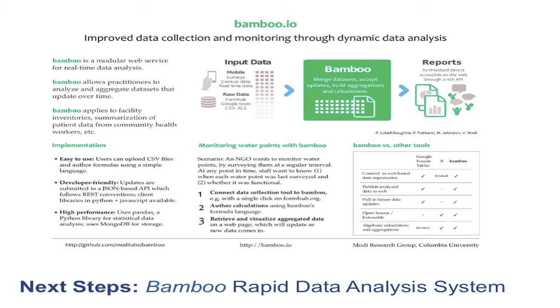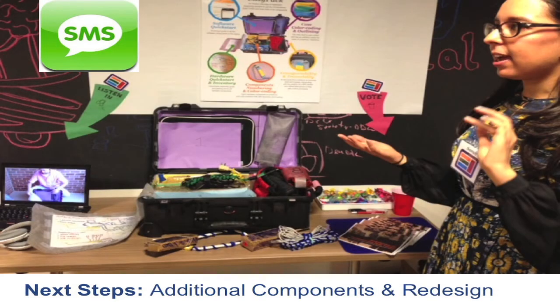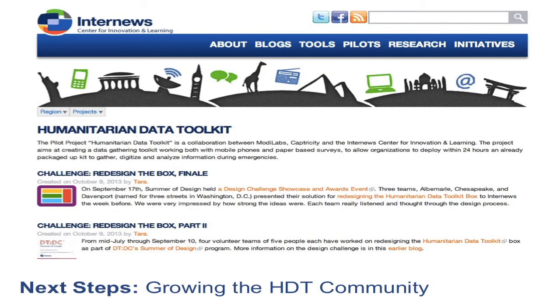Looking forward, one of the next steps for us is continuing to iterate our rapid data analysis system, provisionally called Bamboo. We are also investigating the addition of components such as SMS, and also redesigning the actual box so that it is more user-friendly and intuitive as soon as you drop into a crisis situation. We will also continue to share our lessons learned on our website. The HDT is an open source system and it can be used for a variety of different purposes beyond information needs assessments.